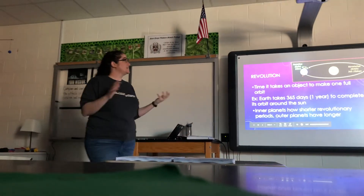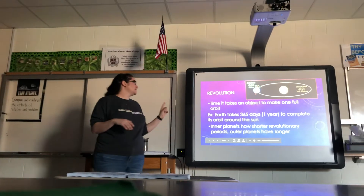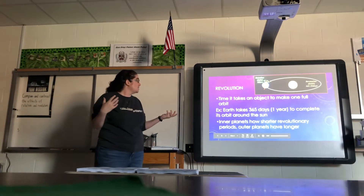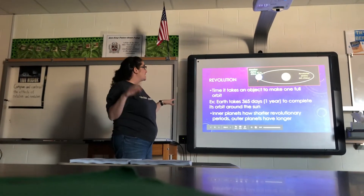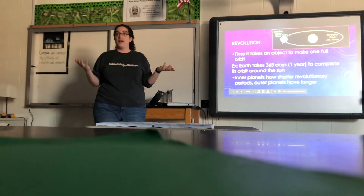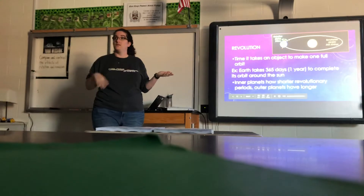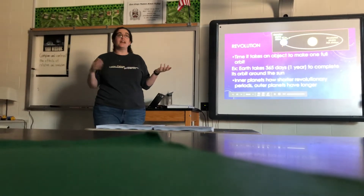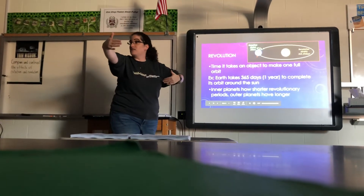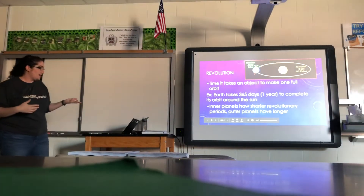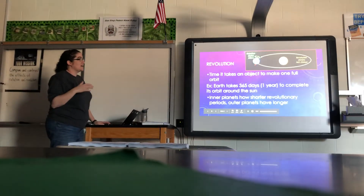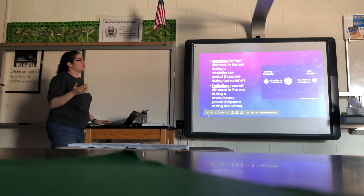Revolution is different from rotation — it's the time it takes for an object to complete one full orbit around the sun or whatever it's orbiting. Earth takes 365 days to go around the sun. Inner planets have shorter revolutionary periods than outer planets because they're closer. It's like running on the inside lanes of a track — less distance. That is one of Kepler's laws: the farther away a planet is, the slower it revolves.